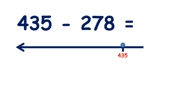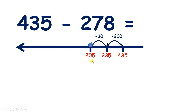Now we have 435 minus 278. So if we start with 4 hundreds, we can subtract 2 hundreds to give us 235. Now we need to subtract 7 tens, but rather than subtracting 7 tens all in one go, we can subtract our 3 tens to give us 205. Now how many more tens do we need to subtract? We need to subtract 4 more tens, and that leaves us with 165.